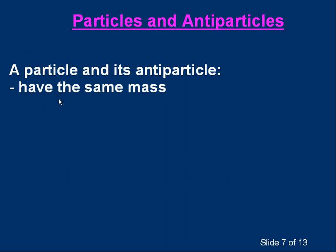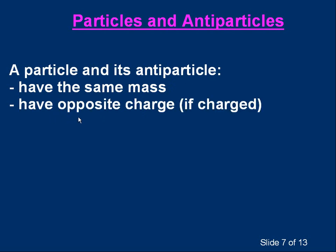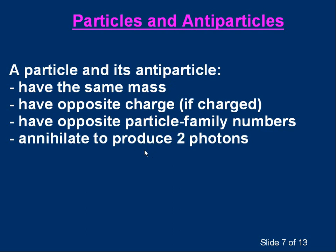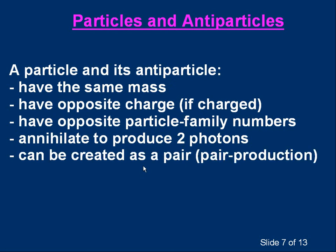We can summarise what we've learnt about particles and antiparticles. A particle and its antiparticle have the same mass. They have opposite charge, if they're charged. They have opposite particle family numbers, like lepton number and baryon number. They annihilate if they meet, to produce two photons. And they can be created as a pair, which is the process of pair production. For every type of particle, there is a corresponding antiparticle.